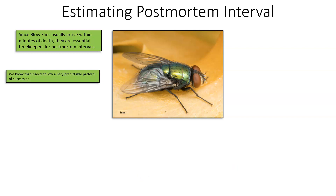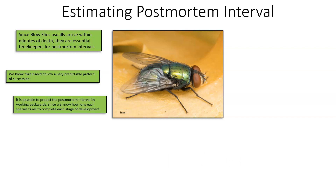We know that insects follow a very predictable pattern of succession. These flies lay eggs. Those eggs develop into first instar larvae, which develop into second instars, then third instars, which pupate, then turn into adults — all within a very predictable pattern of succession. We call that complete metamorphosis. Since we know the life cycle, it is possible to predict the post-mortem interval by working backwards, since we know how long each species takes to complete each stage of development.